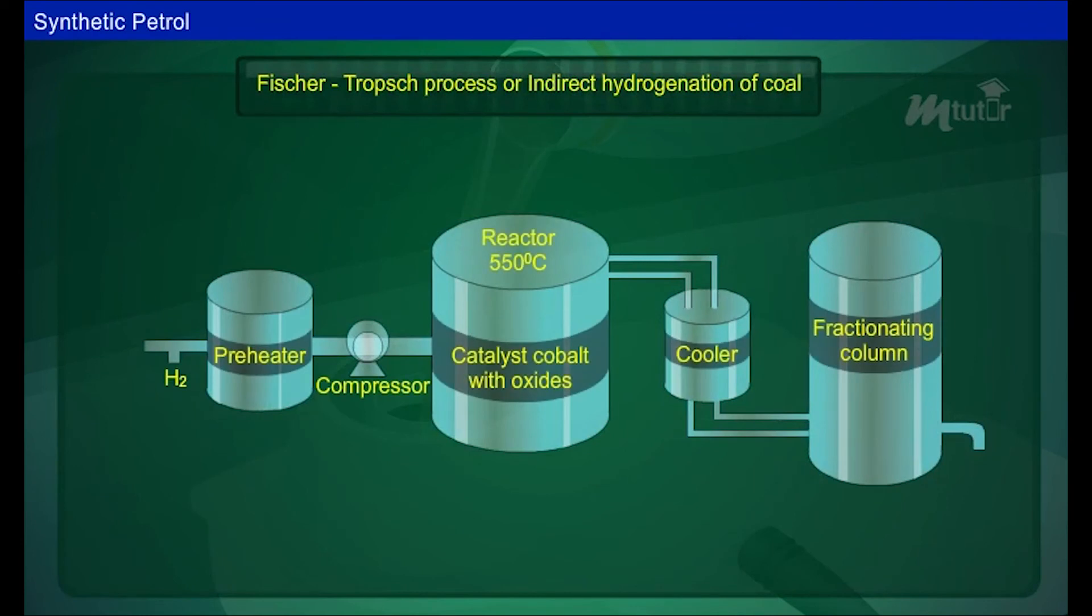The second process is Fischer-Tropsch process or indirect hydrogenation of coal. In this process, coal is first converted to coke. Then coke is heated and steam is passed over it. Water gas is produced.